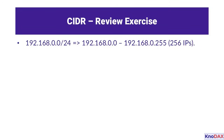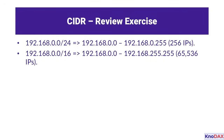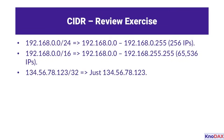Let's review CIDR notations and their corresponding IP address ranges. The CIDR block 192.168.0.0/24 represents the range 192.168.0.0 to 192.168.0.255, which includes 256 IP addresses. 192.168.0.0/16 expands the range to 192.168.0.0 through 192.168.255.255, covering 65,536 IP addresses. The CIDR 134.56.78.123/32 specifies just a single IP, 134.56.78.123. Finally, 0.0.0.0/0 represents all possible IP addresses, effectively meaning any IP.